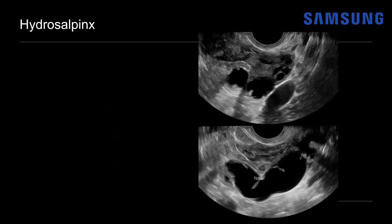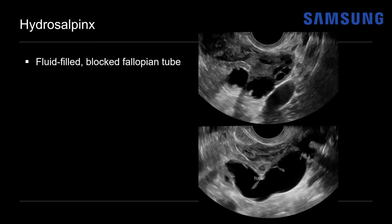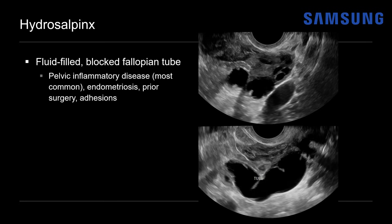This is typical for a simple hydrosalpinx. A hydrosalpinx is a fluid-filled blocked fallopian tube, seen most commonly after pelvic inflammatory disease, where inflammation and adhesions lead to obstructed fallopian tubes. It can also be seen in the setting of endometriosis involving the tube, prior surgery, or anything causing pelvic adhesions such as Crohn's disease, where recurrent bowel inflammation can lead to pelvic adhesions.